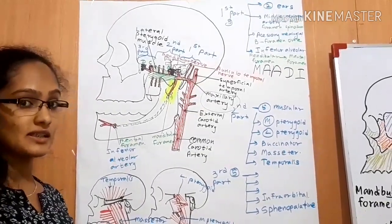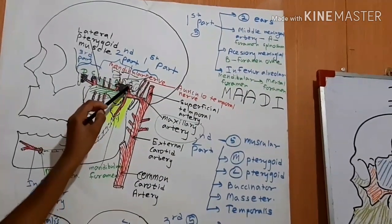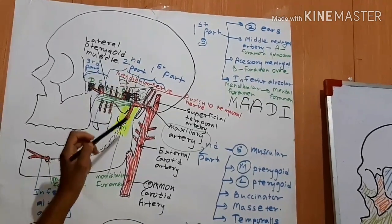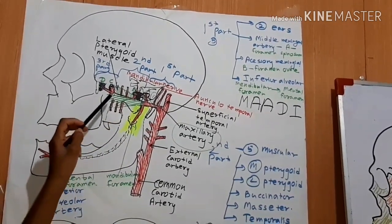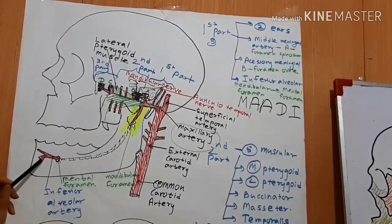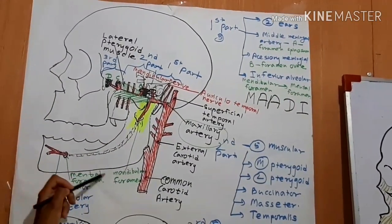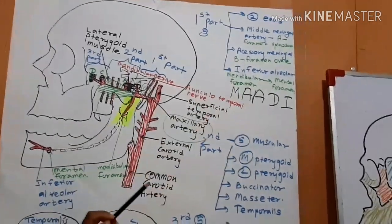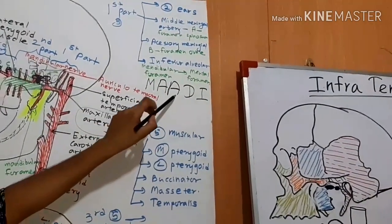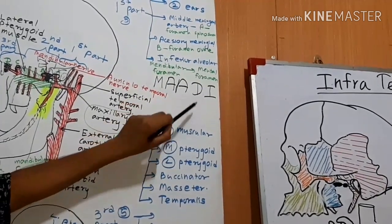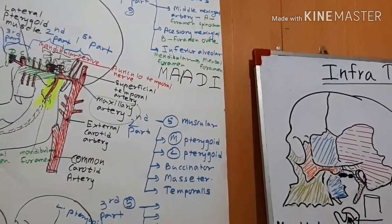From the first part of the maxillary artery, the branches most commonly asked in MCQs are: the middle meningeal artery, which enters the cranium through the foramen spinosum; the accessory meningeal artery, which enters through the foramen ovale; the anterior tympanic artery; the deep auricular artery; and the inferior alveolar artery, which enters the mandible through the mandibular foramen and exits through the mental foramen. We can remember these using the mnemonic MADI — M for middle meningeal, A for accessory meningeal, A for anterior tympanic, D for deep auricular, and I for inferior alveolar.